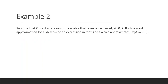Let's do an example. Suppose that x is a discrete random variable that takes on values negative 4, negative 2, 0, and 2. If y is a good approximation for x, determine an expression in terms of y which approximates the probability that x is negative 2. Our first step is to find the width. Each value of x is 2 apart, and so the width k is 2.